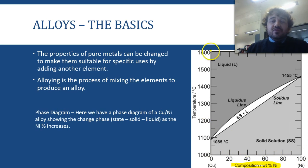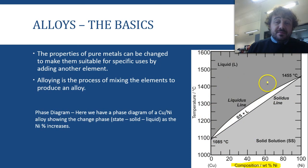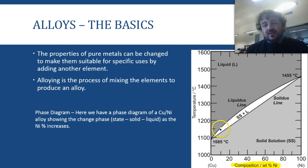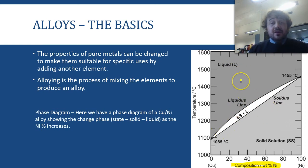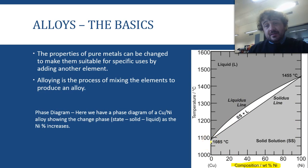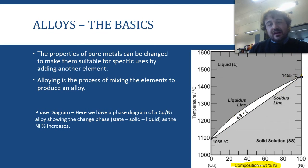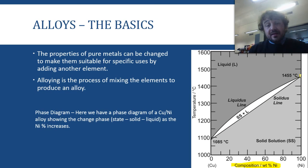Here's the temperature axis. Down here it's a solid, up here it's a liquid, and this stage in between is where it's melting — so it's a solid solution transitioning to a liquid solution. As we get more and more Nickel, it starts off at just the Copper melting point, and they blend fairly seamlessly up to 100% Nickel, which is the Nickel melting point. They blend really well.